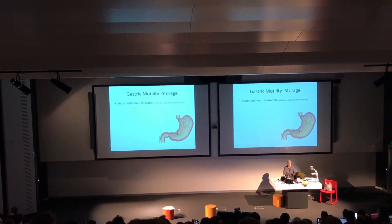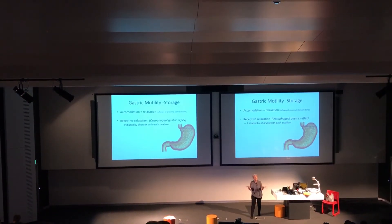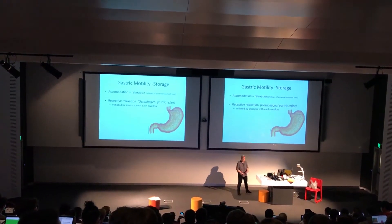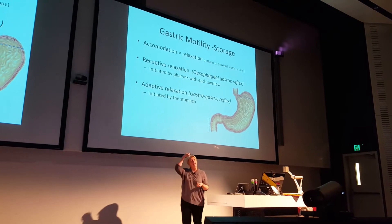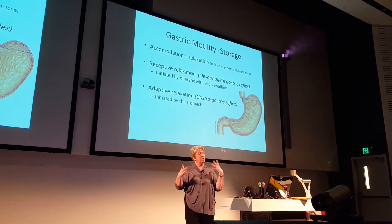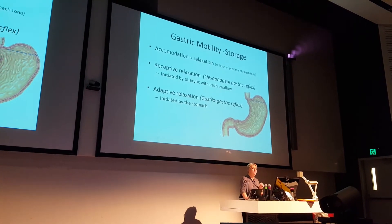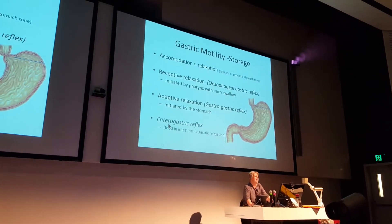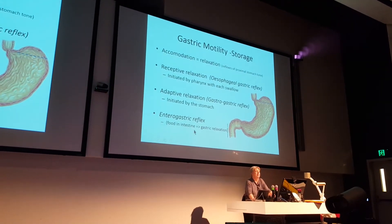There are a few reflexes here that are important. The first is receptive relaxation — that's when we're preparing to receive the food, initiated in the esophagus before it gets to the stomach, at the pharynx. Adaptive relaxation is when the food hits the stomach and the stomach accommodates and relaxes more. Then there's the gastrogastric reflex — stimulation in the stomach, response within the stomach — and finally the enterogastric reflex, when food moves into the intestines and produces an effect in the stomach.